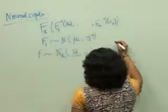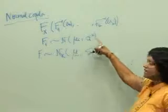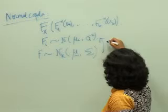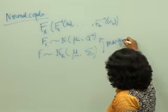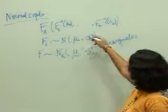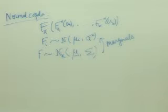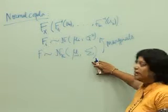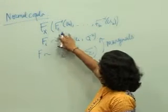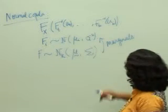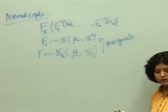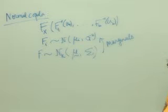the ith component of mu is mu i and the diagonals are the sigma. So the marginals should match. The marginals of this are these. So start with a multivariate normal and then evaluate it at these marginals and the copula, corresponding copula you get is the normal copula.